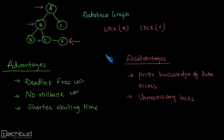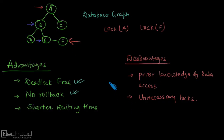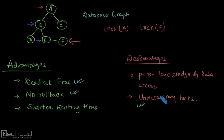The disadvantages are that the system must have prior knowledge of data access — it needs to know the order in which data is going to be accessed, which is an overhead. Also, as seen in the example, we do not completely eliminate unnecessary locks. Even if we don't require access to database items B and E, we had to lock them because we cannot acquire a lock if the parent is not locked. So unnecessary locks still exist. In the next lecture we will take an example to understand how graph-based protocol works.